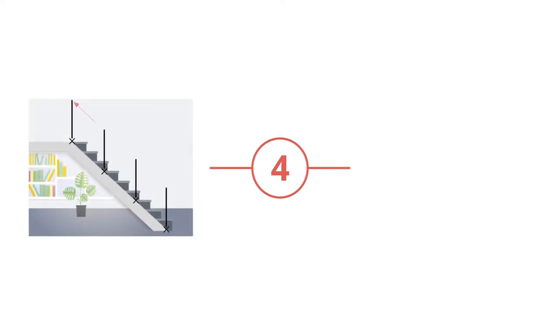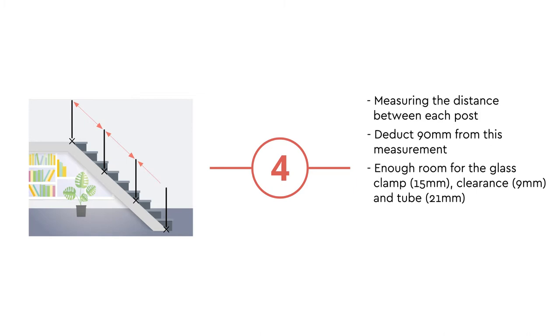You then need to measure what the width of the glass panels will be by measuring the distance between each post. You should then deduct 90mm from this measurement, ensuring there is enough room for the glass clamp 15mm, clearance 9mm and tube 21mm to be placed on each side. Multiply this by 2 for both edges of glass.